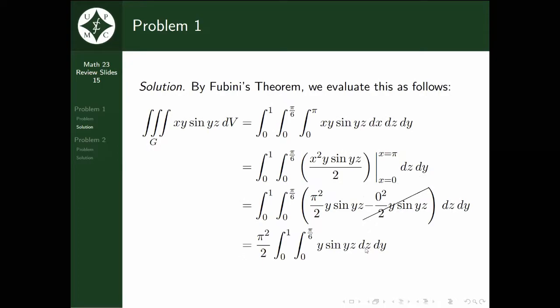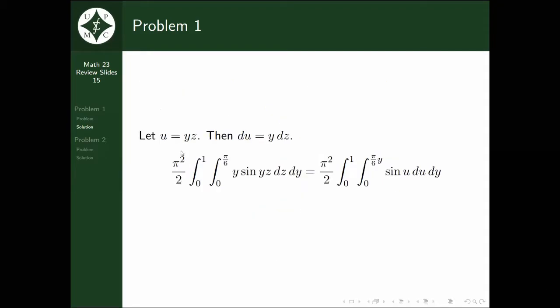Next, we can now do an integral with respect to z. But if you look at the sine, it has yz inside. Thankfully, we can treat y as a constant because we are integrating with respect to z. But we have to have a substitution, which will be u = yz. If we differentiate both sides, then du = y dz.